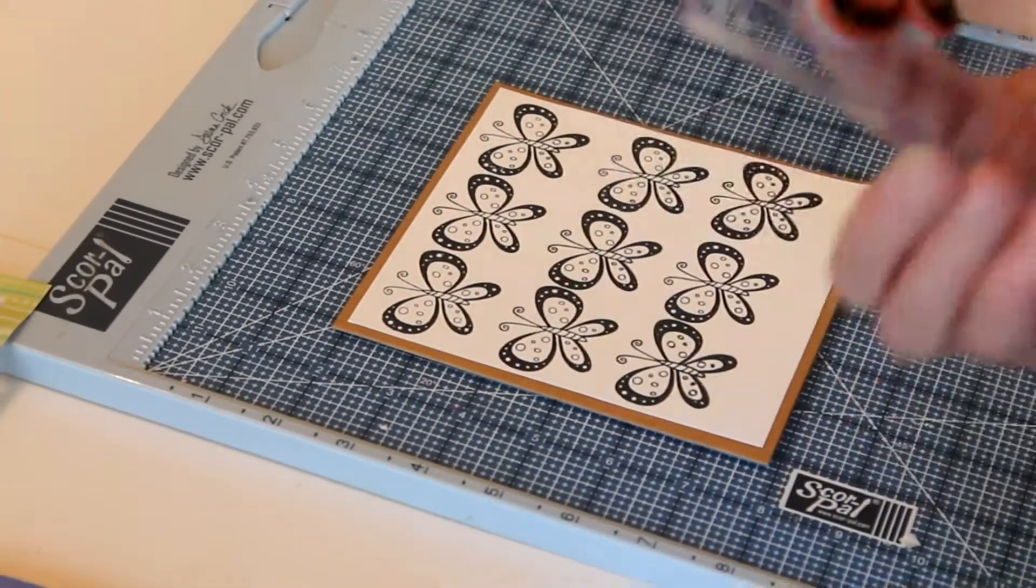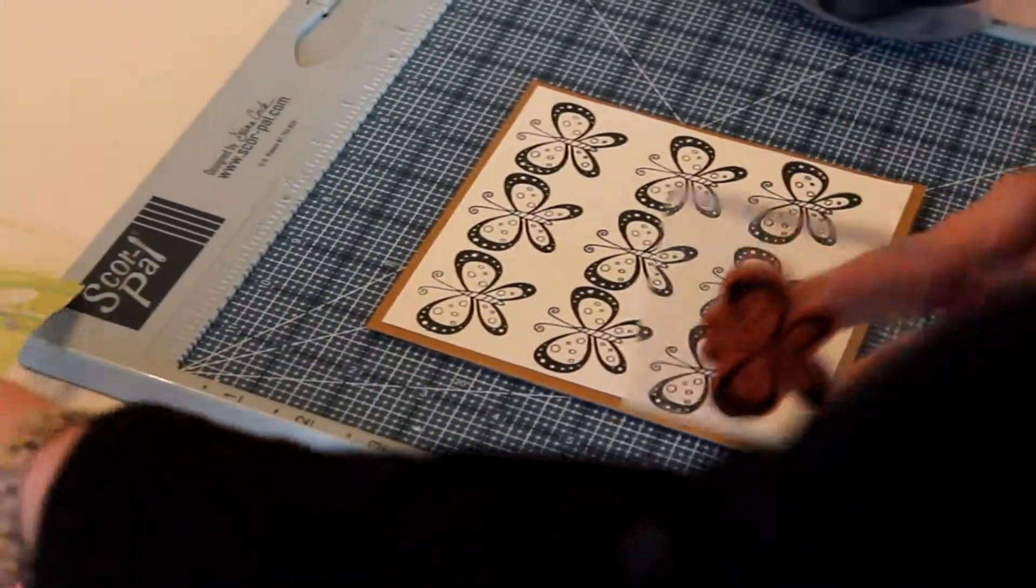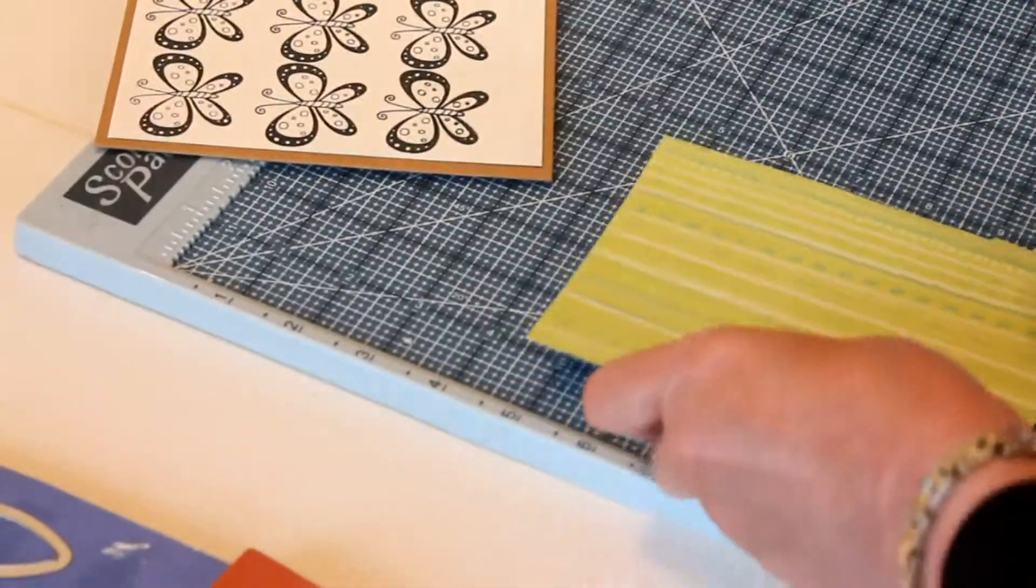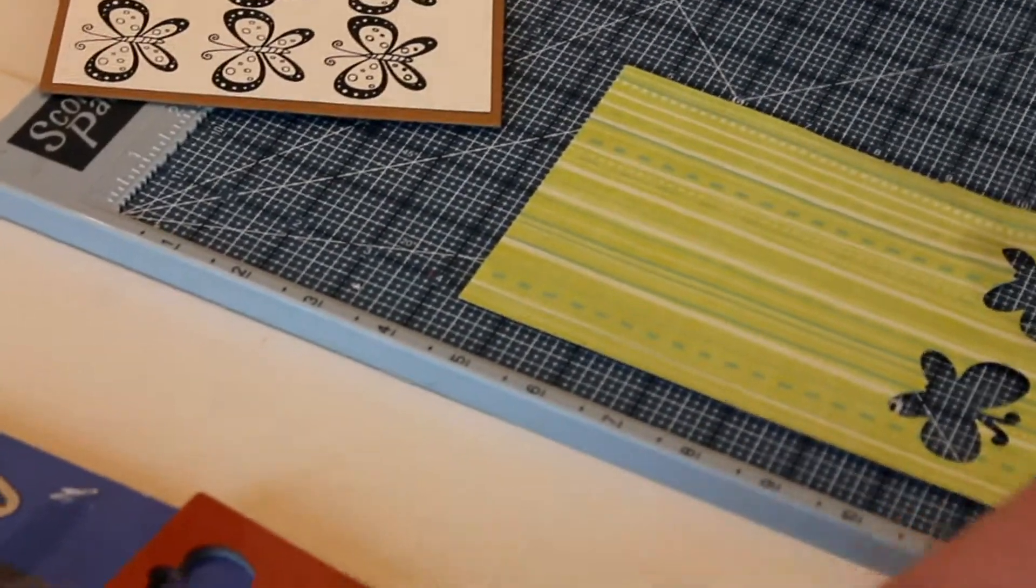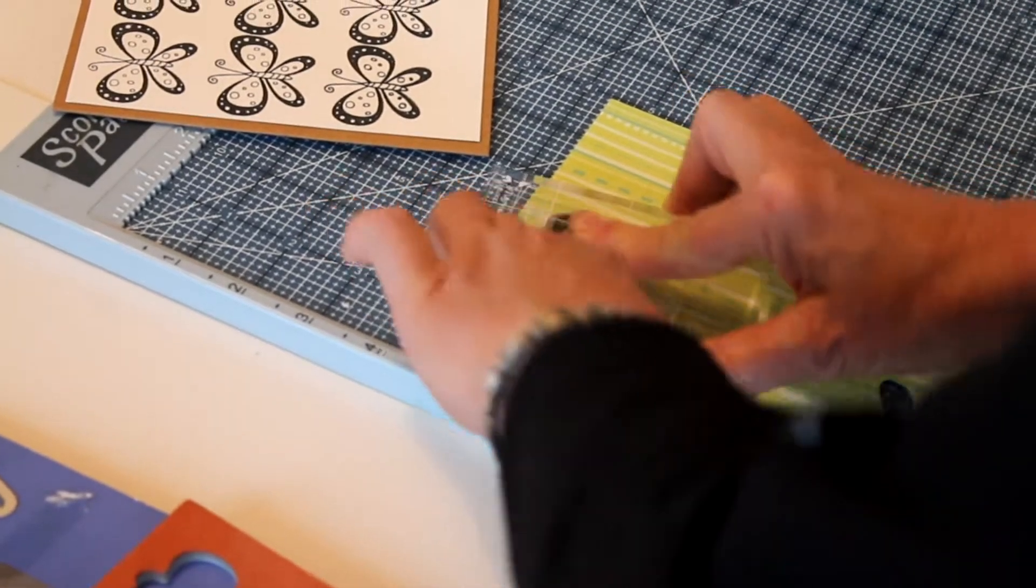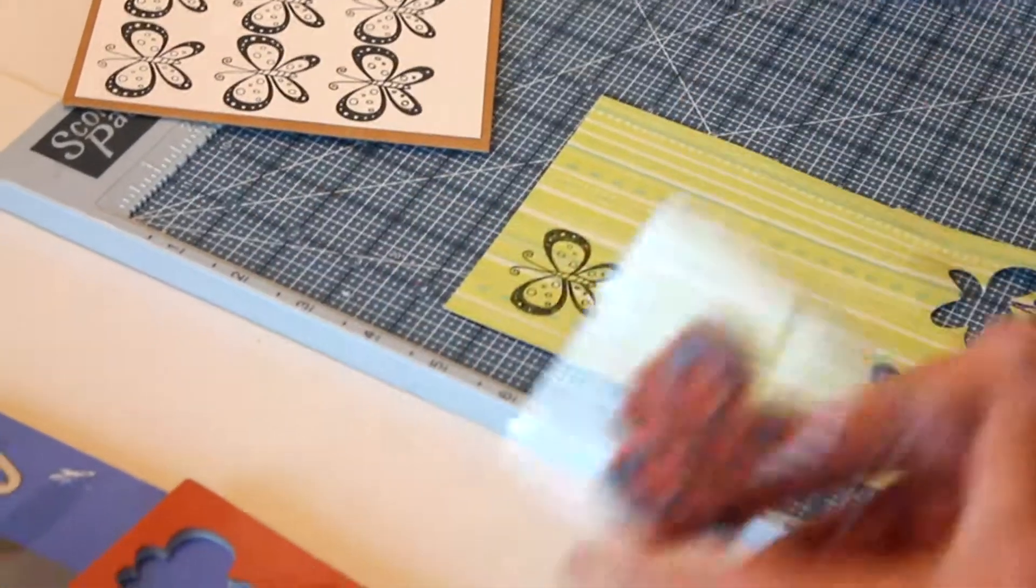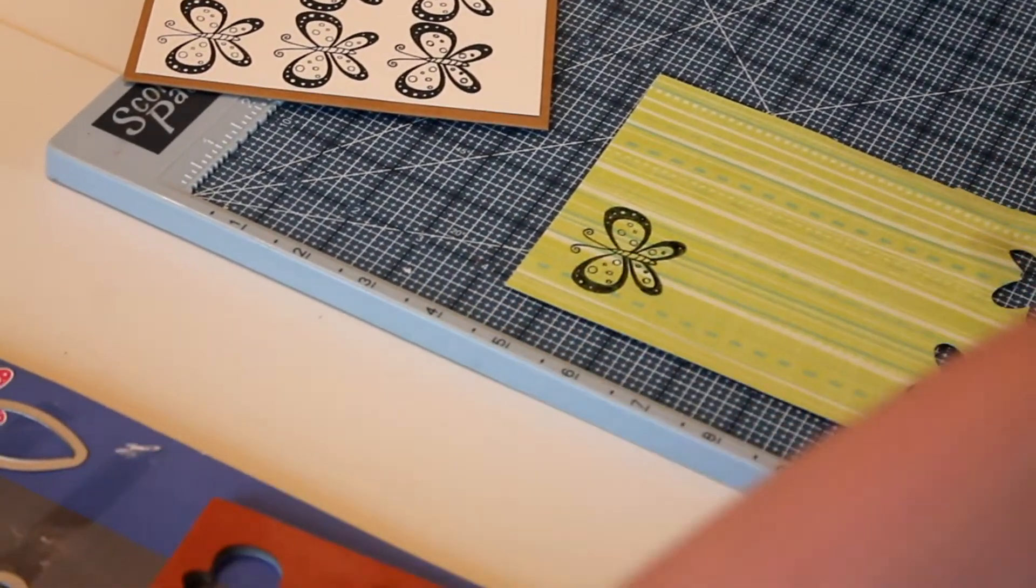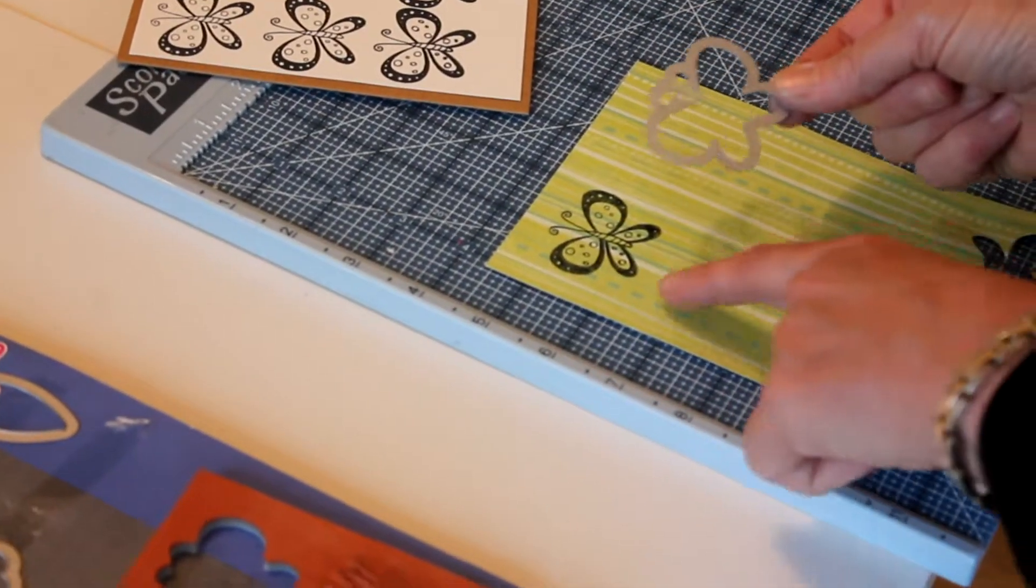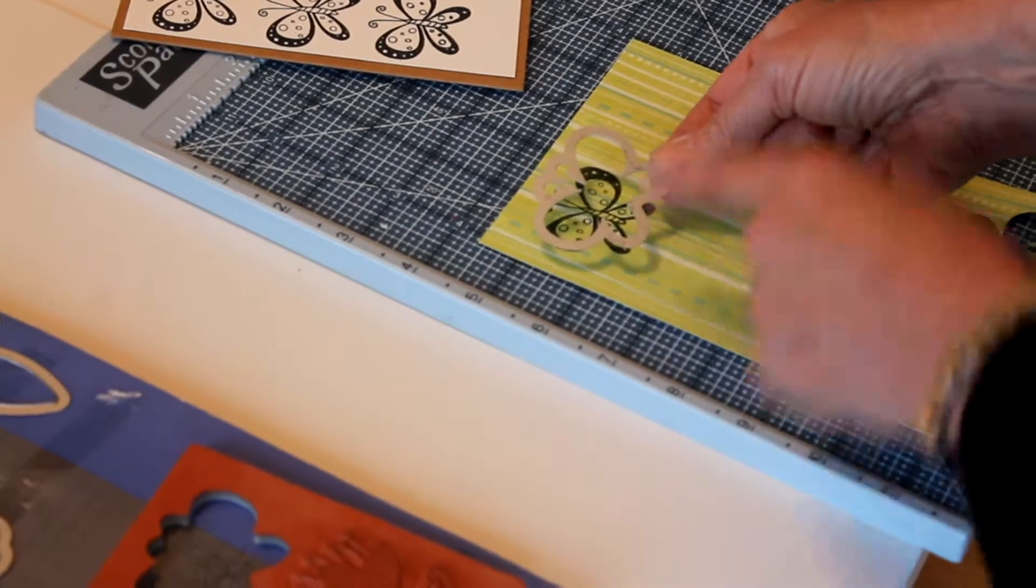Finally, I'm going to stamp the butterfly again on a nice colorful piece of paper. There is a matching die to go with the little butterfly, so off camera I'm going to run it through my Big Shot.